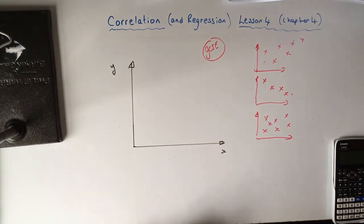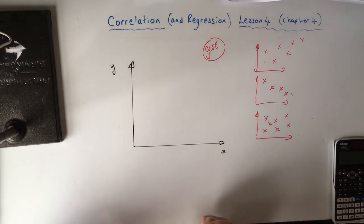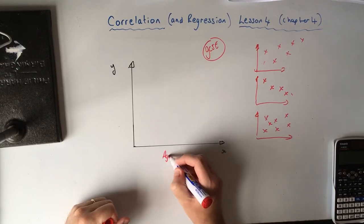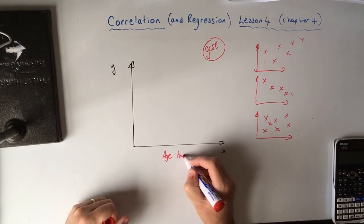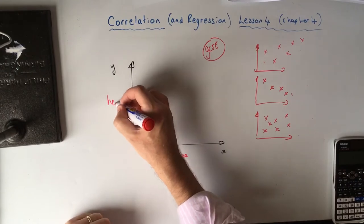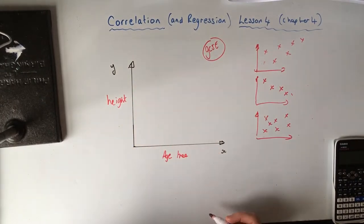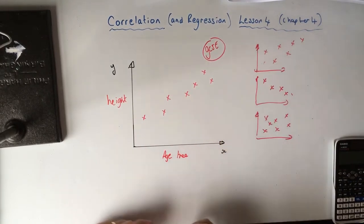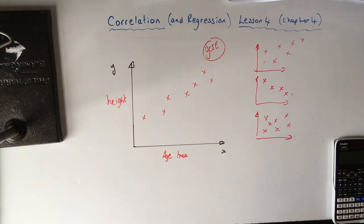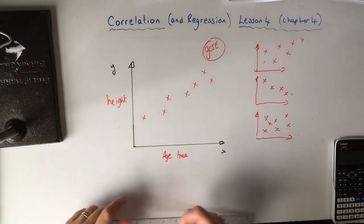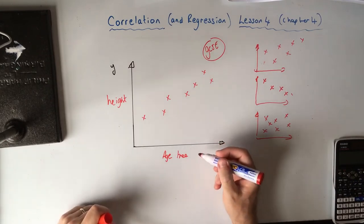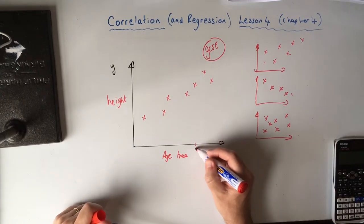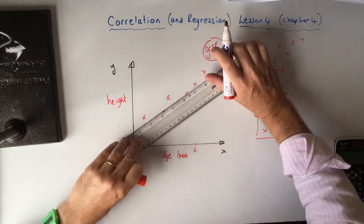A typical GCSE question would be something like the age of a tree and the height of a tree. You'd have data for a particular type of tree, plot a scatter graph, and in the exam it might say a tree is six years old — how high do you think it would be? So you'd look at six, draw your line of best fit, go up until you reach the line and read across.